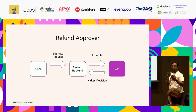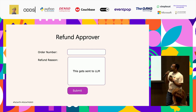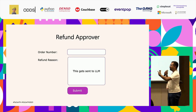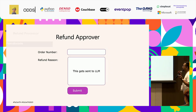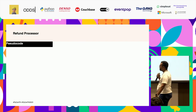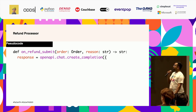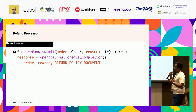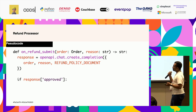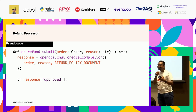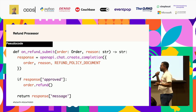The user submits a request to your system backend. Your backend prompts the LLM — because you want to automate things — the LLM makes a decision. The form has an order number and a refund reason; the refund reason gets sent to the LLM. In the pseudocode: when someone submits a refund, we get the order information and the reason, make an LLM completion call with the order, reason, and refund policy document. We check if the response says 'approved' — if the LLM decides to approve, we approve it; otherwise we respond with a rejection message.